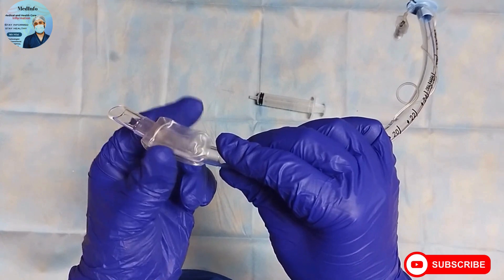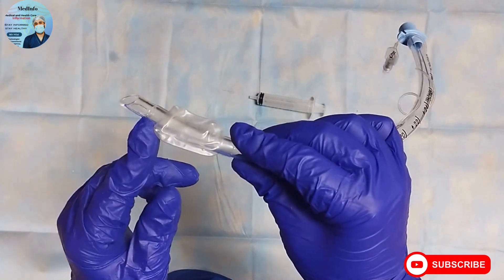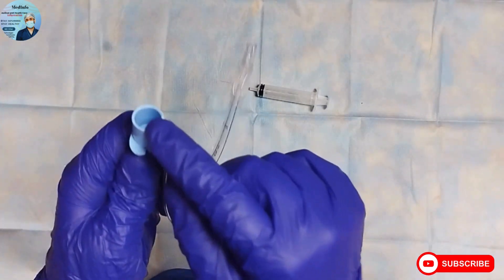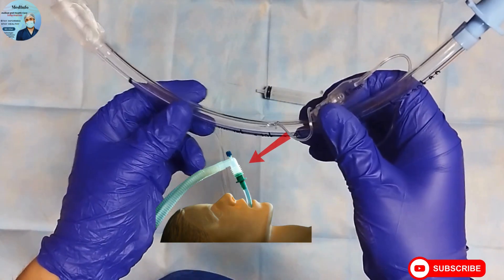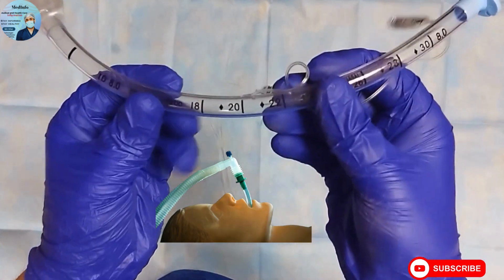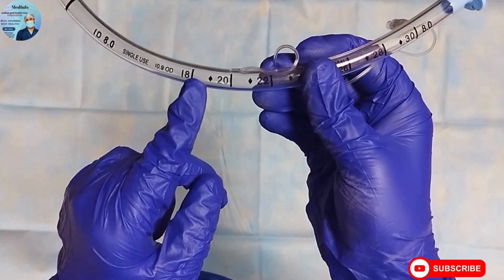This is the connector through which you can connect the endotracheal tube to the patient circuit. Now, while deciding the size of endotracheal tube, the size varies from 2mm to 10mm ID.